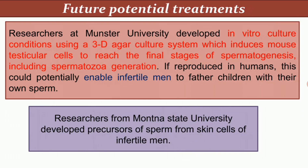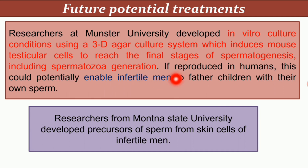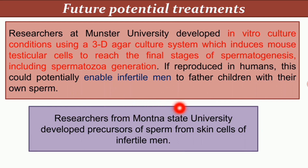Some future potential treatments are also being researched. Researchers at Münster University developed in vitro culture conditions using a 3D agriculture system that induces mouse testicular cells to reach the final stages of spermatogenesis. If reproduced in humans, this could enable infertile men to father children with their own sperm. Researchers from Montana State University have also developed precursors of sperm from skin cells of infertile men.